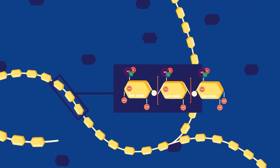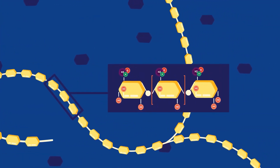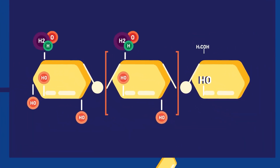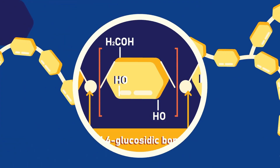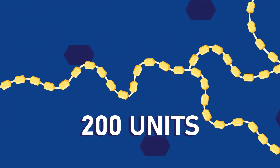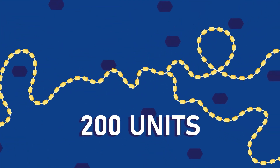These chains are a composition of straight and branched chains. The glucose units are linked by bridges or chemical bonds, which may contain as many as 200 glucose units.